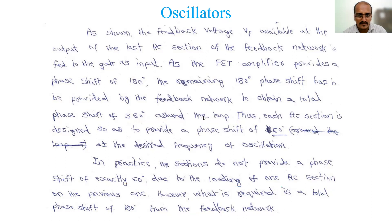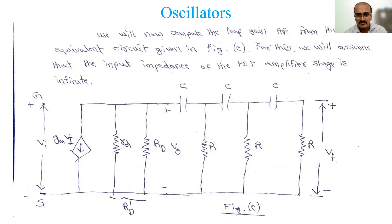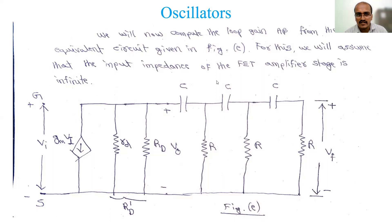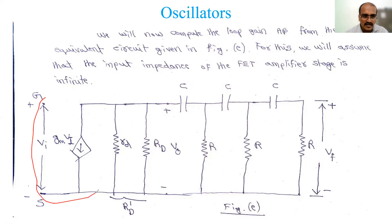The analysis of this FET amplifier is not detailed in the textbook — the equations are written directly — but I have solved it in detail here, so be careful. We will compute the loop gain A·beta from the AC equivalent circuit. We assume that the input impedance of the FET amplifier stage is infinite, just like a MOSFET, so the FET model looks accordingly.